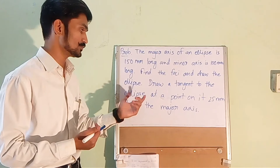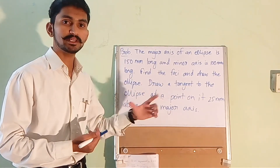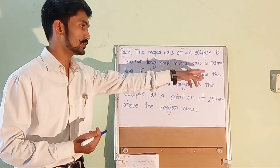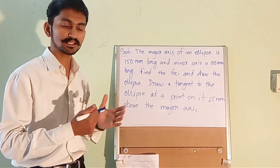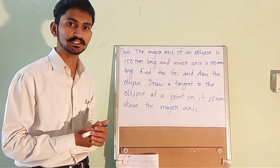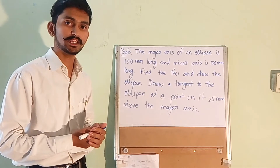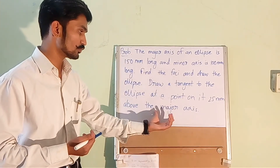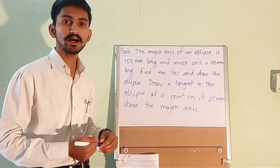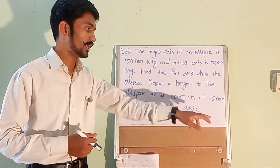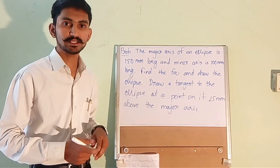Also draw a tangent to the ellipse at a point on it 25 mm above the major axis. So we have the length of the major axis and the length of the minor axis, and we have to construct an ellipse using the arc of circle method. We also have to show the foci of the ellipse, and draw a tangent at a point which is 25 mm above the major axis.